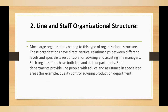Staff departments provide line people with advice and assistance in specialized areas. For example, a quality control department may advise the production department — the staff specialist helps and advises the line manager. This is the line and staff organizational structure.